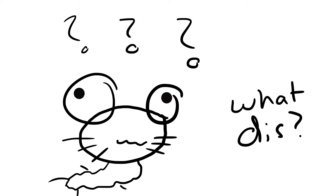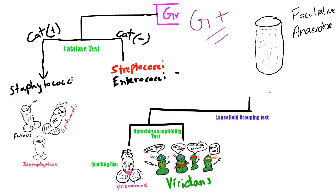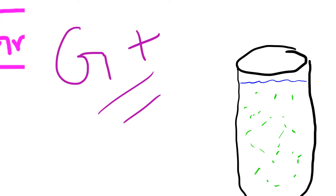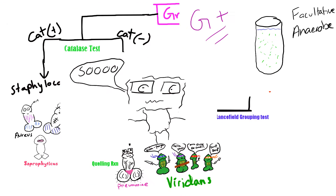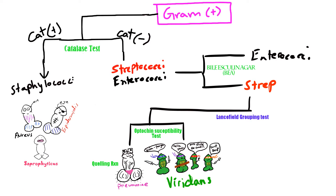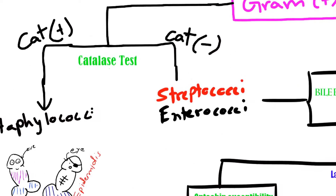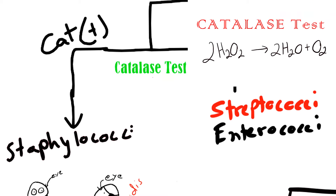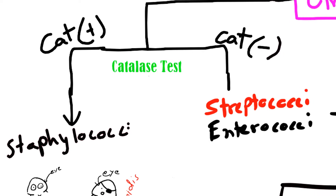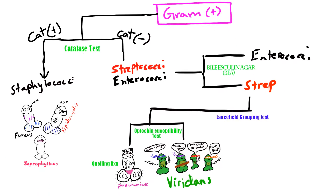So what are these Streptococcus viridans organisms? They are gram positive and facultative anaerobes, so they normally use oxygen but they can survive without it. They are catalase negative, meaning they can't break down hydrogen peroxide into water and oxygen. This test is used to distinguish Staphylococcus from Streptococcus organisms.